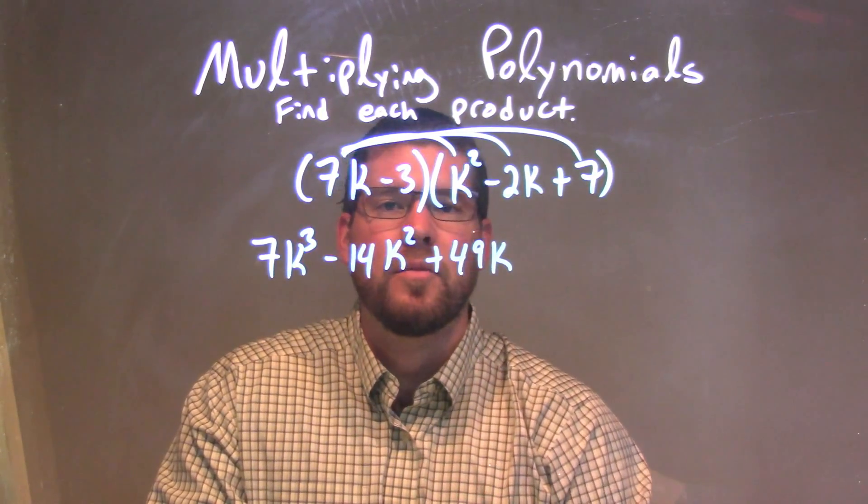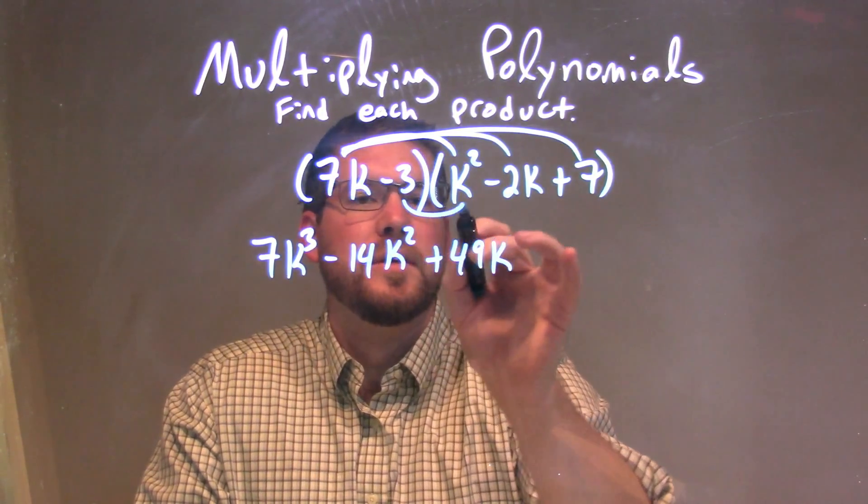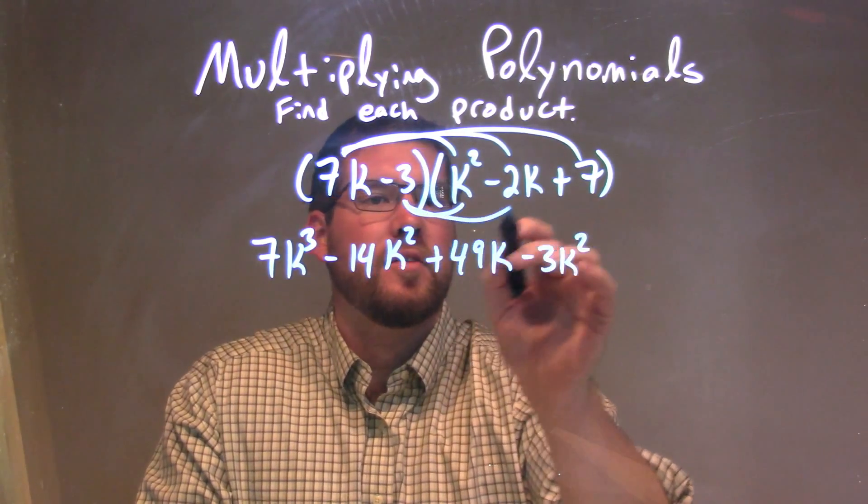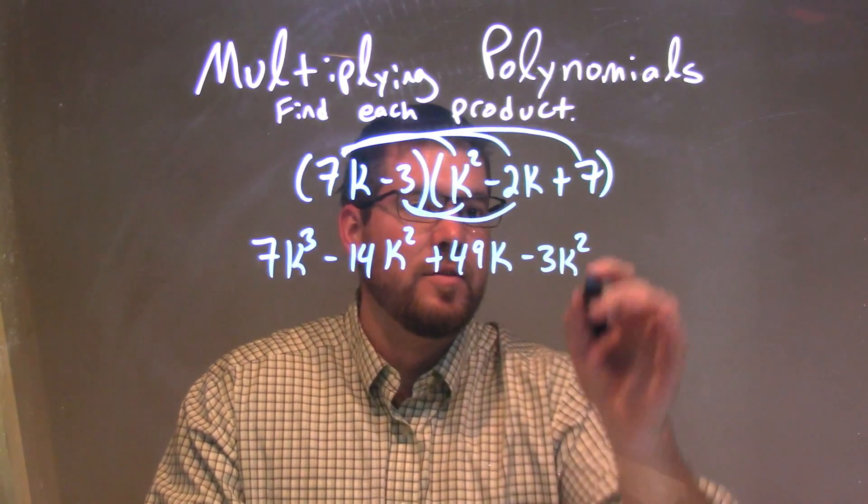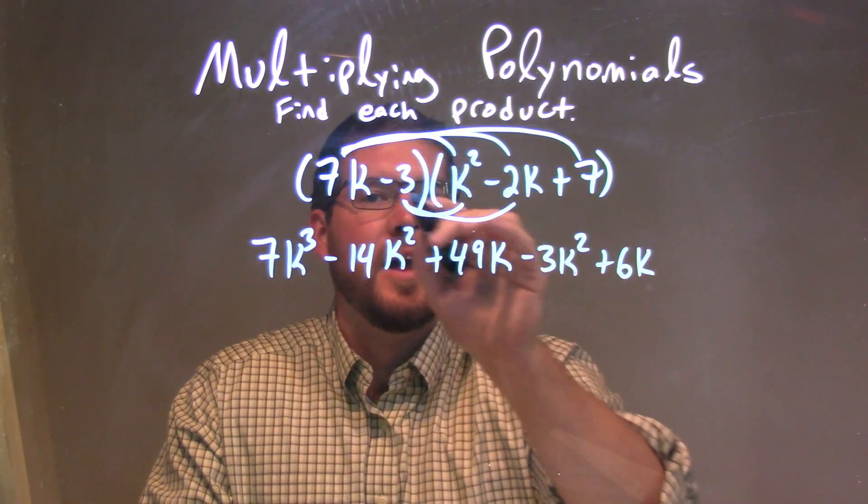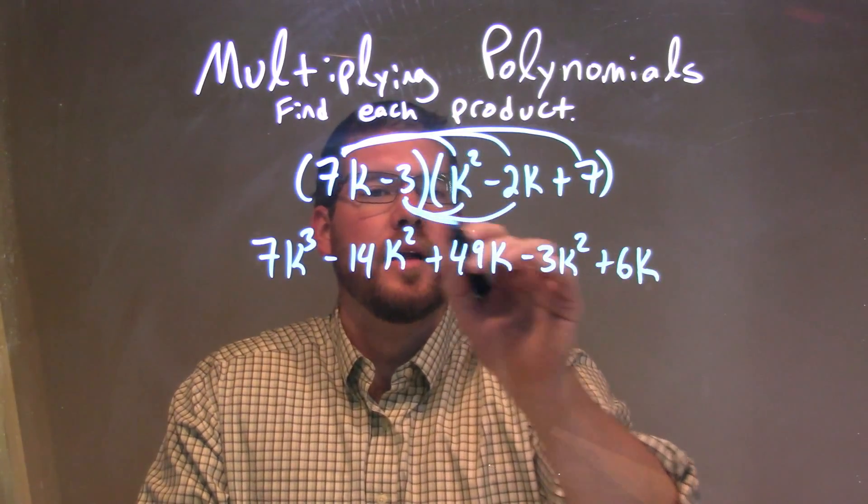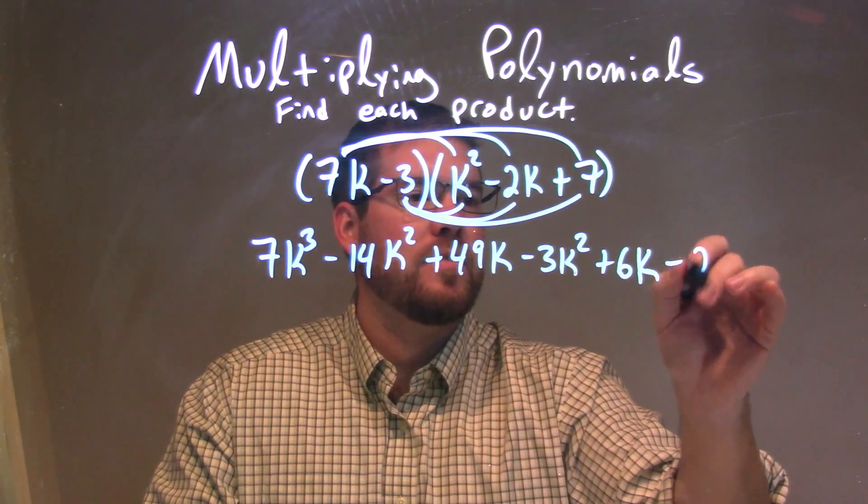Now we've done everything with the 7k, so let's do it with the minus 3. Minus 3 times k squared is minus 3k squared. Minus 3 times minus 2k is a positive 6k, since negative times a negative is a positive. And minus 3 times 7 is minus 21.